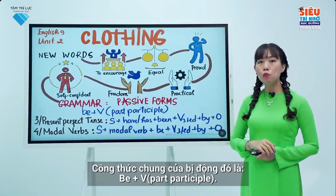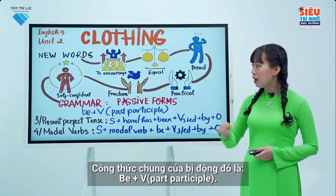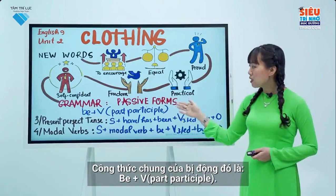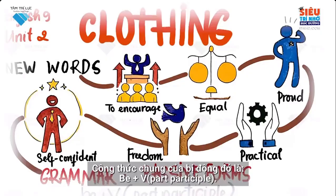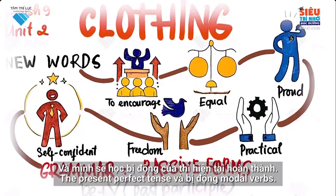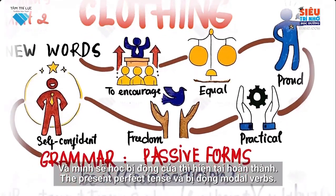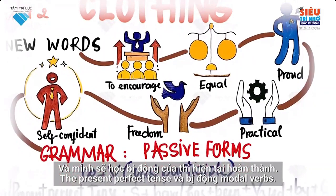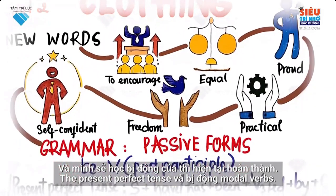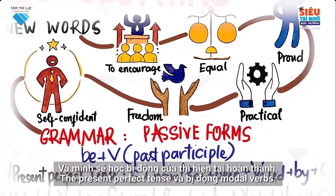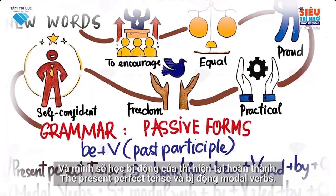The general structure of the passive form is: be plus verb past participle. Today we will learn about the present perfect tense and passive form of modal verbs.